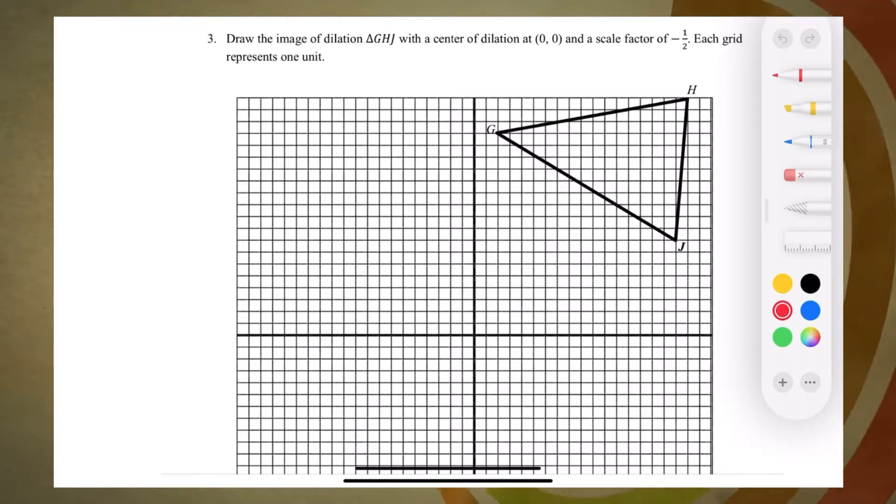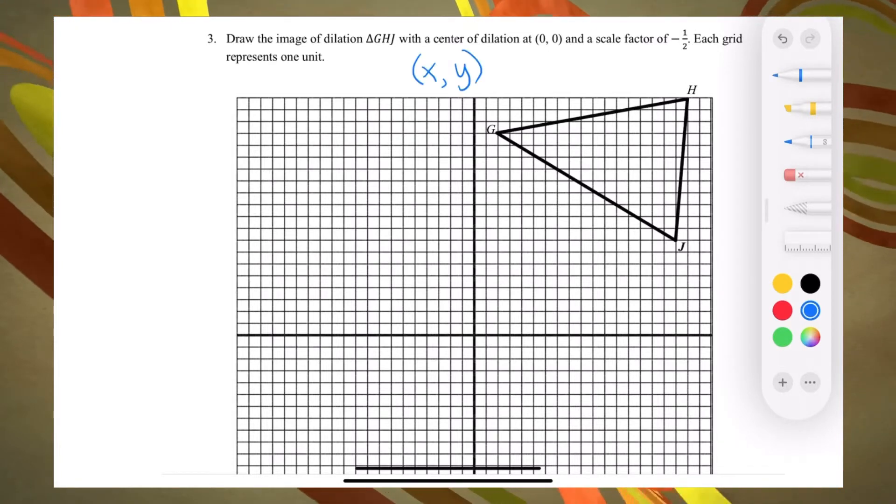Since the center of dilation is at 0,0 or at the origin, just multiply each coordinate by the scale factor K, where K is negative one-half.